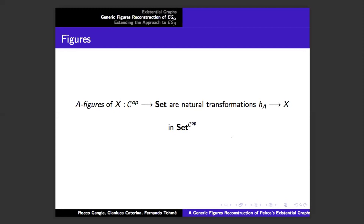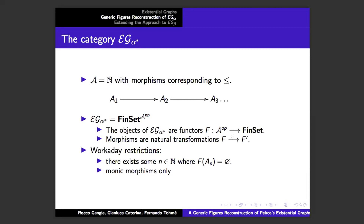The reason we define these generic figures is that we can have A-figures of any presheaf in the functor category Set to the C op. The A-figures of an arbitrary presheaf from C op into Set are just natural transformations H_A into X. We build a category EG alpha star that represents these cuts-only graphs. Our base category is basically N with the standard ordering, and EG alpha star is the category of presheaves from A op into finite sets — objects are functors, morphisms are natural transformations.